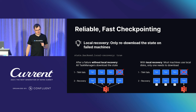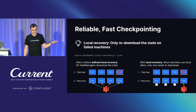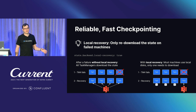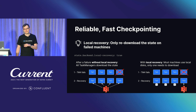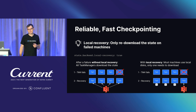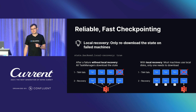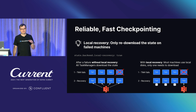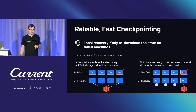Another important configuration is local recovery in Flink. Without local recovery, if one task manager fails, all task managers have to redownload state from the state backend such as S3. With local recovery enabled, only the failed machine needs to redownload state — all other machines reuse locally cached data on disk. This reduces network traffic, lowers S3 costs, and also benefits scenarios using the adaptive scheduler in Flink when restarting a job to rescale.